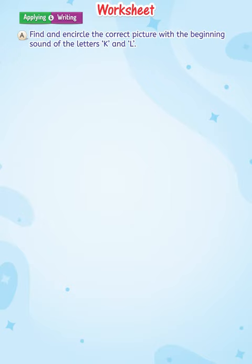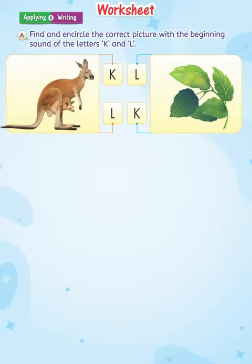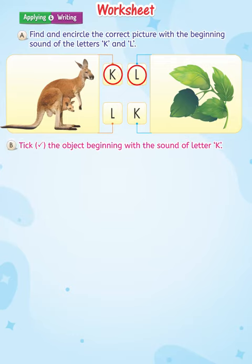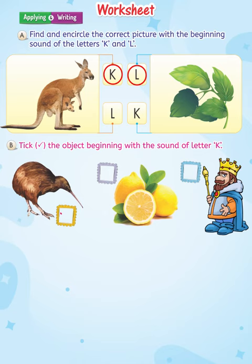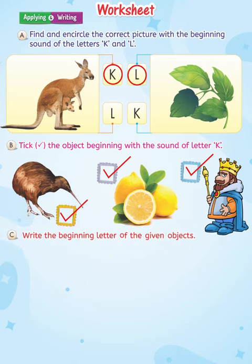Find and encircle the correct picture with the beginning sound of the letters K and L. Tick the object beginning with the sound of letter K. Write the beginning sound of the given objects.